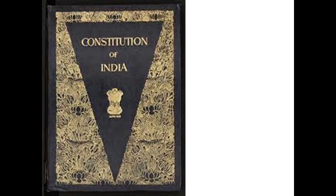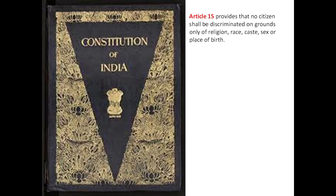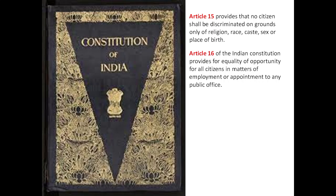In India, in order to bring justice to these depressed classes, the founders of the Constitution wrote certain articles and rights for these depressed peoples. Article 15 provides that no citizen shall be discriminated against on grounds only of religion, race, caste, sex, or place of birth. Similarly, Article 16 provides for equality of opportunity for all citizens in matters of employment or appointment to any public office.